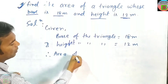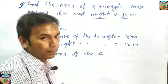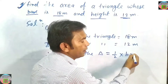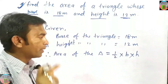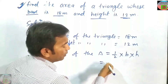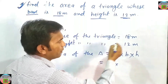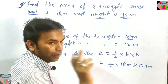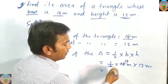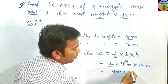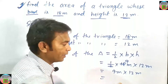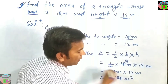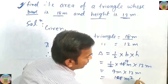Therefore, area of the triangle. Remember the formula: area of the triangle is equal to 1 by 2 into base into height. Write here: 1 by 2 into base equal to 18 meter, into height equal to 12 meter. 2 and 18 cancel out — 9 meter into 12 meter. 12 nines are 108. 108 meter square is your correct answer.